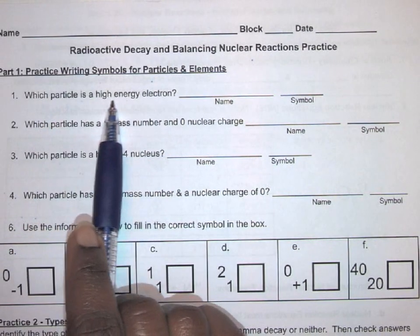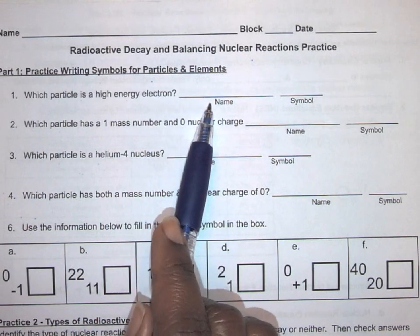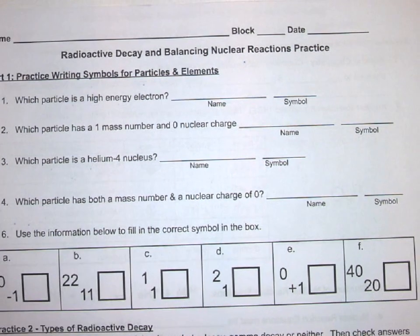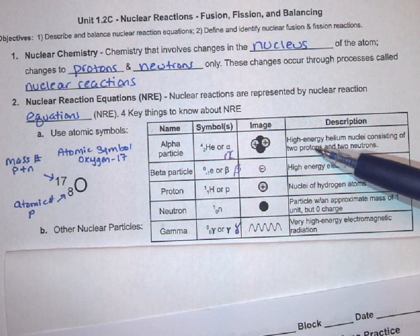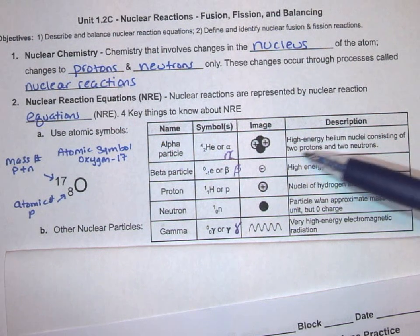For example, it says, which particle is a high-energy electron? I want the name of that particle and the symbol. I'll go to my table and I'll look for information. I'm looking for, in this case, a description—high-energy electron. Here we are.